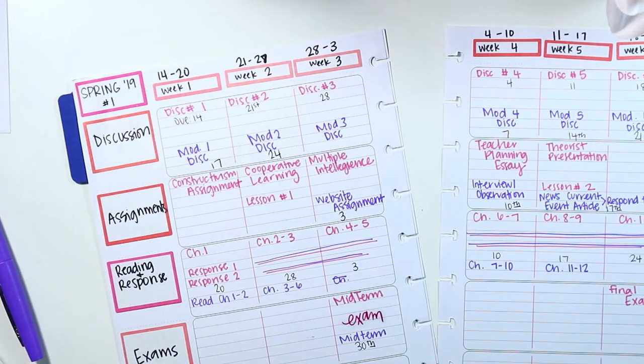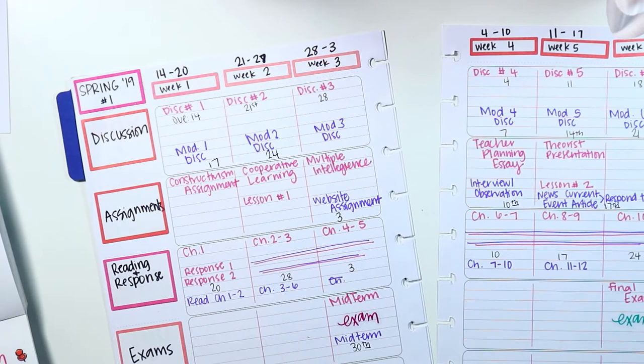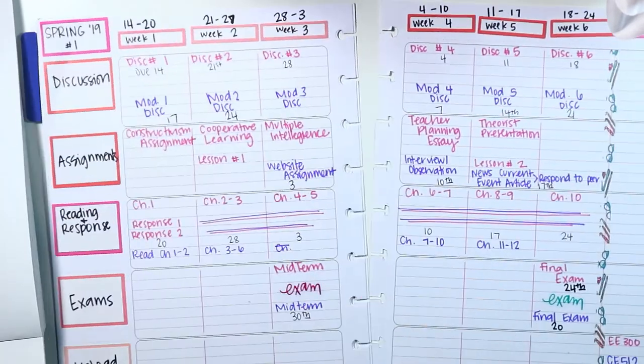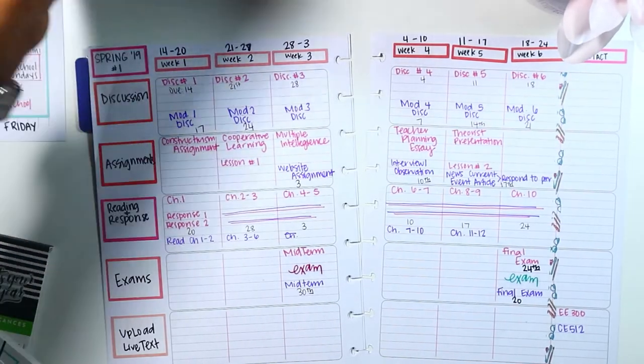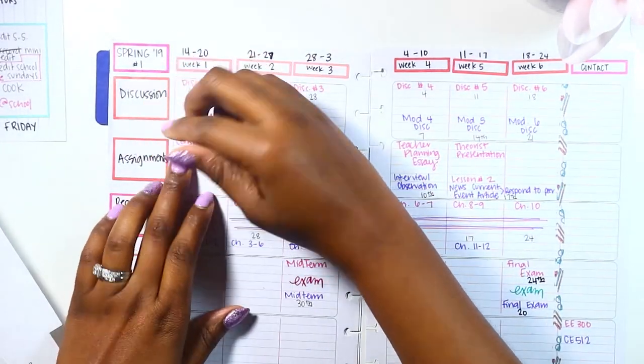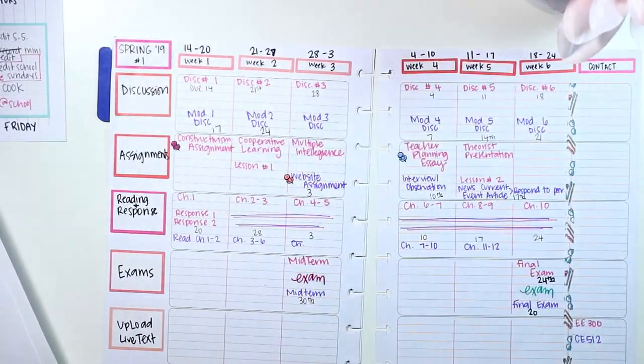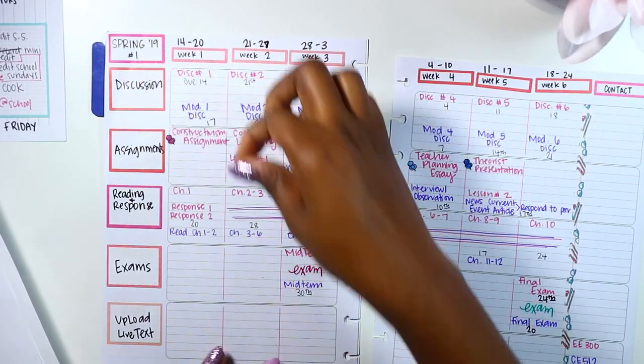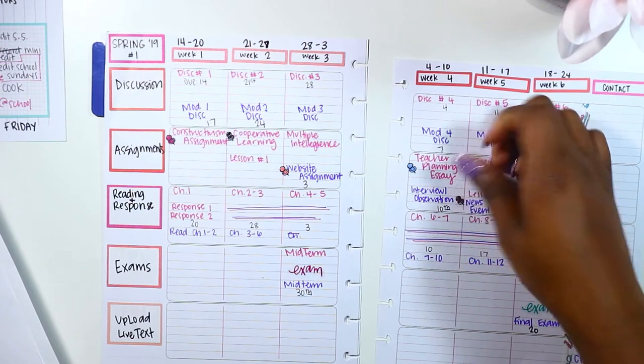Now on to my favorite part of planning, which is decorating. I'm going to use these exam stickers. I chose the teal and the hot pink because I feel like it really goes with my color scheme. And then I love these little pushpins, guys. So I decided to notate my major assignments, the ones that are worth a lot of points, using those pushpins.